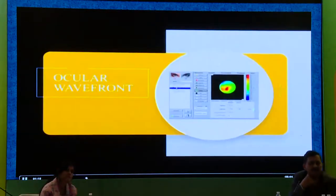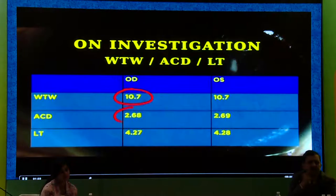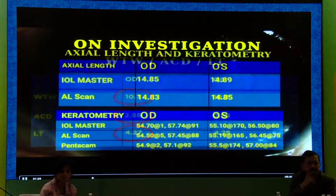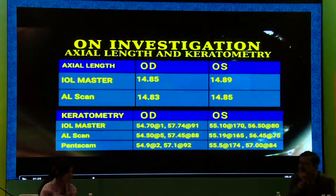All this was done, and her axial length was 10.7, ACD of 2.68, and lens thickness of 4.27 — a short eye with white-to-white normal, lens thickness 4.27 in both eyes. The axial length was 14.84, so one-fourth of the axial length is the thickness of the lens. The ACD is very shallow and the cornea is very steep at 57 diopters.